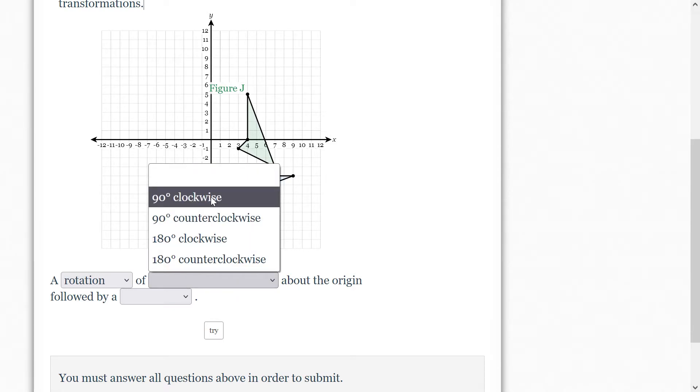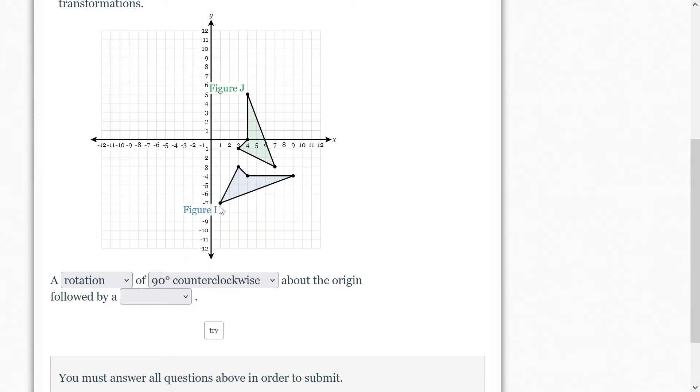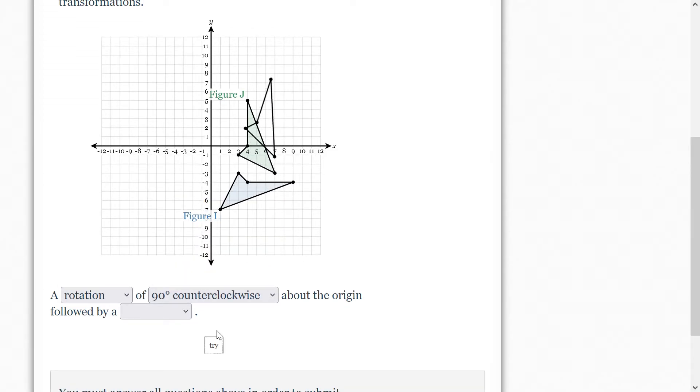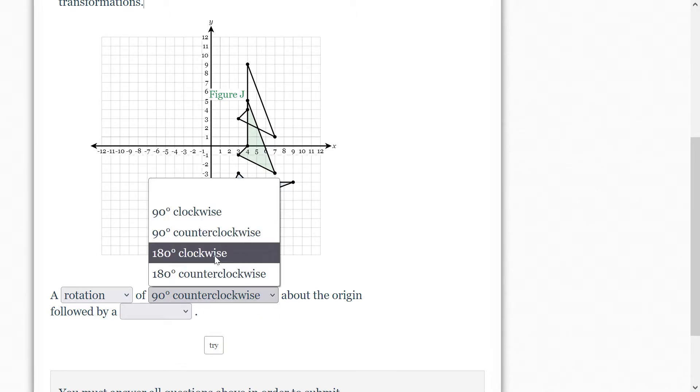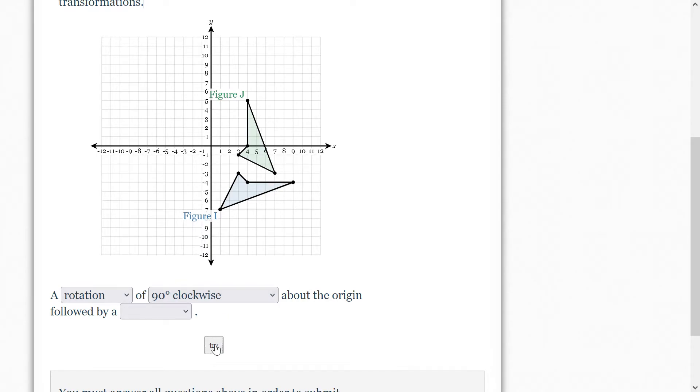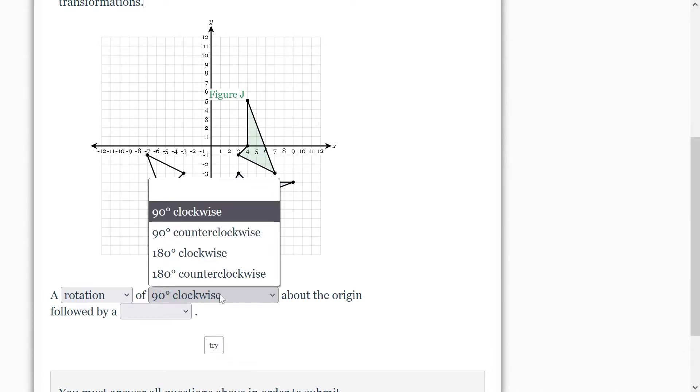So we'll say 90 degrees counterclockwise. That seems about right. And if we hit try, actually we can stop halfway through and it will show us what we did. Say we went 90 degrees clockwise, we hit try, we'd recognize that's probably not it.